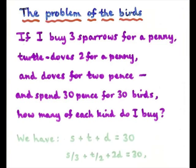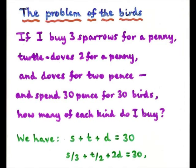Here are our two equations. First of all, the number of sparrows plus turtle doves plus doves is 30. And if you work out the cost in pennies, you've got three sparrows for a penny, so s over 3 plus t over 2 plus 2d equals 30.